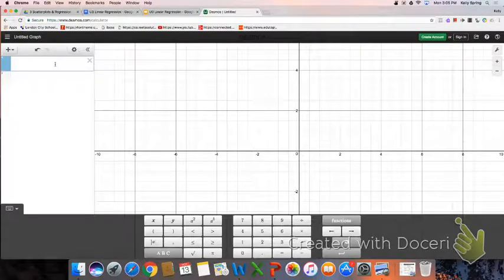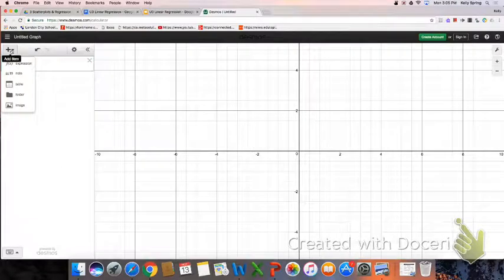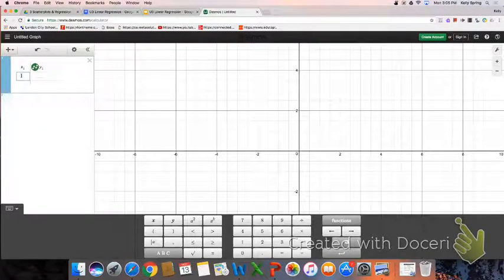So to enter in the data, I'm going to put it in as a table. So I say plus there to add a new table. And then I'm just going to go through and enter in this data. So I'm going to pause the recording while I do that.